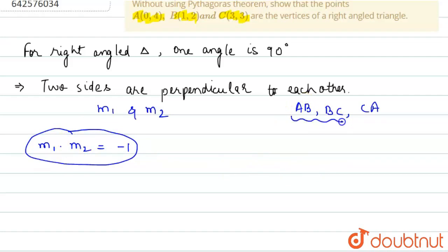We have these three lines AB, BC, and CA, and we will find the slope of these three lines one by one. Let us take AB first.